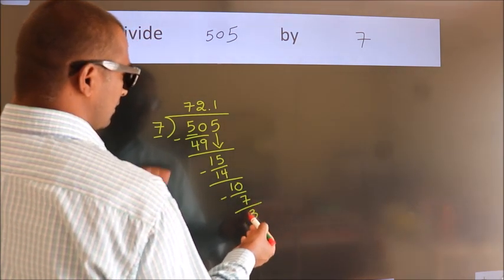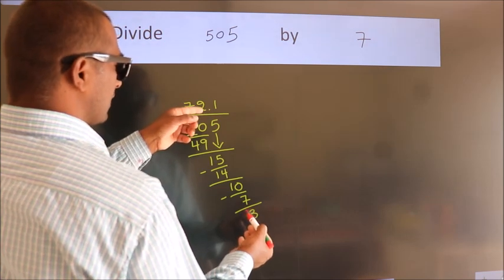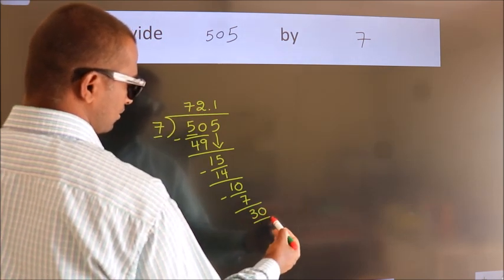After this, we already have the decimal. So directly take 0. So 30.